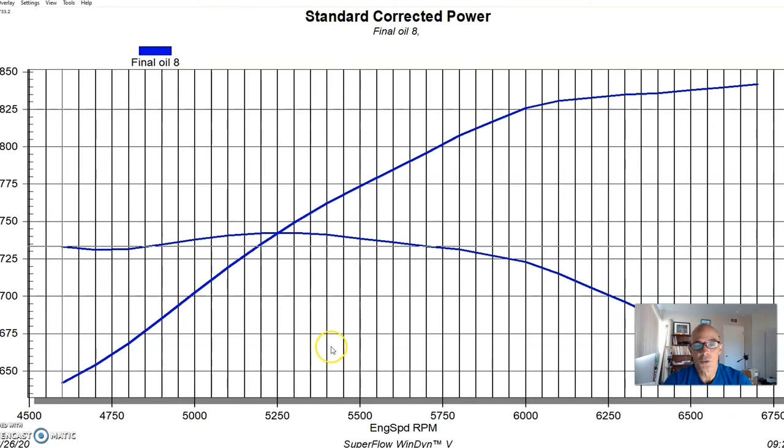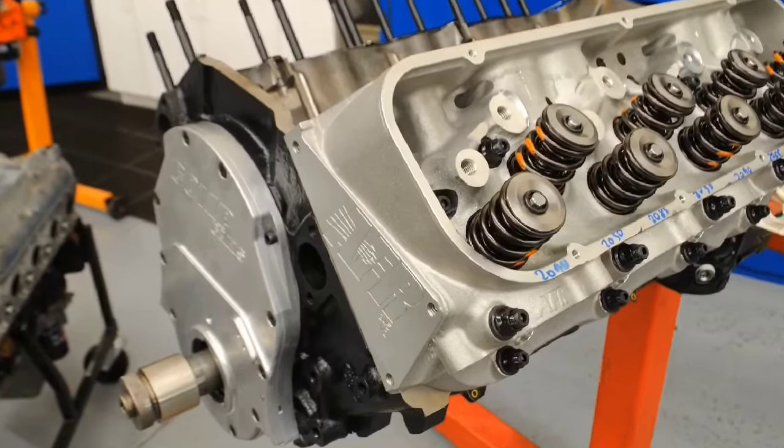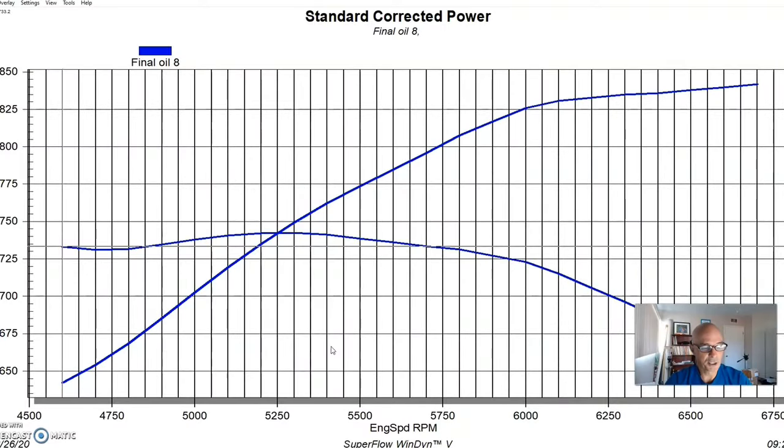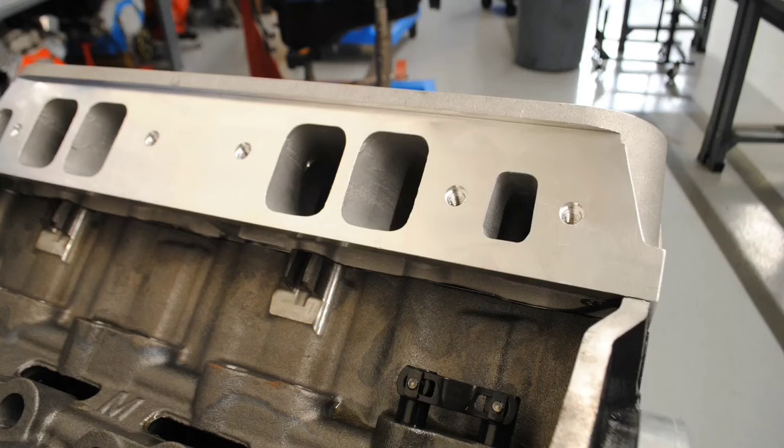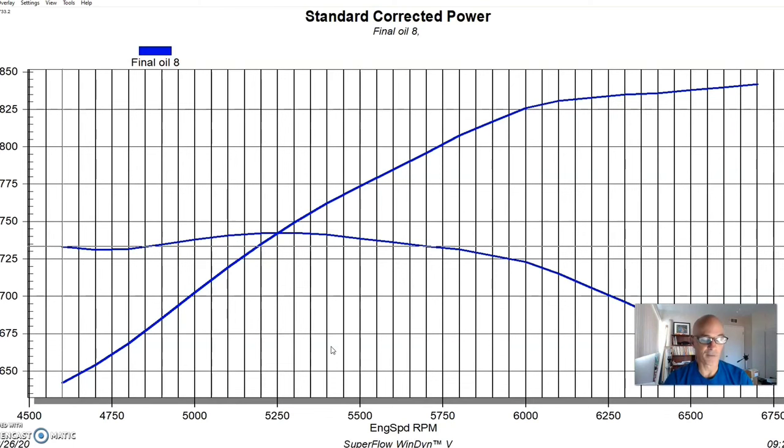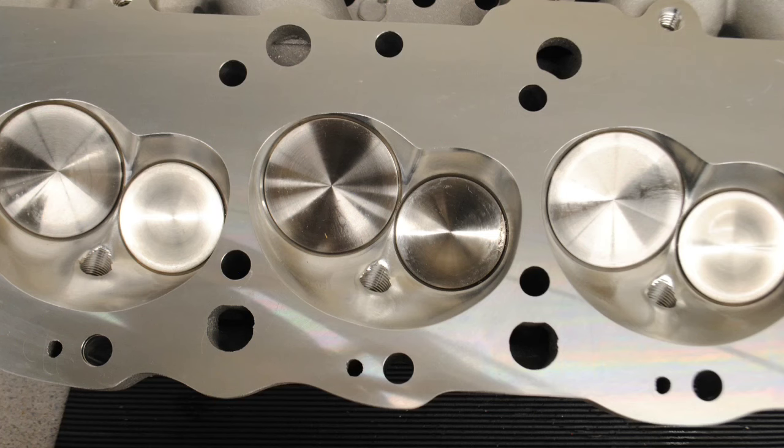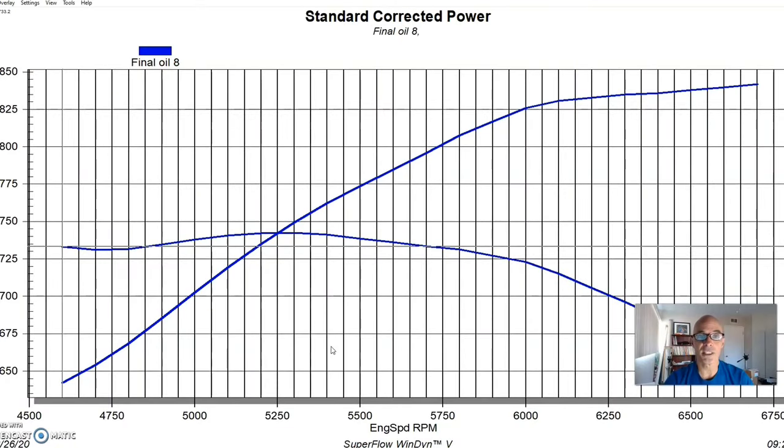So the first test was to run the Airflow Research 345 as-cast heads. This is an interesting comparison between the as-cast and the full CNC heads that we put on from ProMax. But the Airflow Research heads were an as-cast port, a 345 cc intake port and a 124 cc exhaust port. They're available with either 117 cc or 121 cc chambers. Now the 121 cc chambers are the full CNC chamber. It's an as-cast port and bowl, but with a full CNC chamber, and it works really well. We opted for the 121 cc chambers.